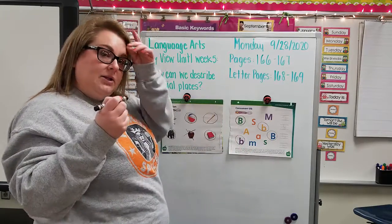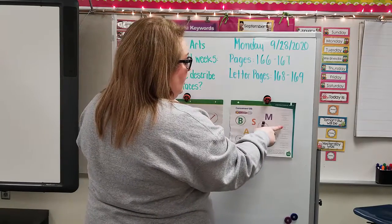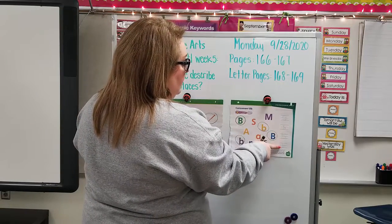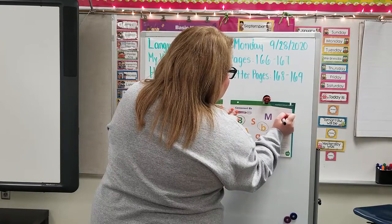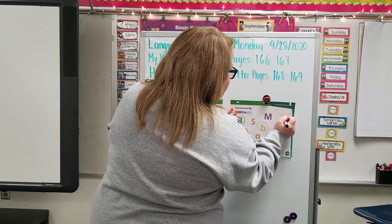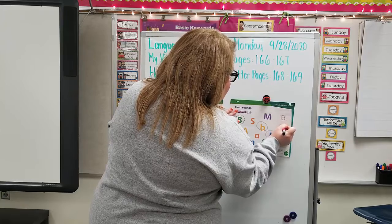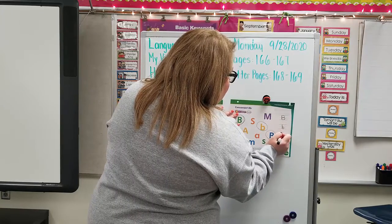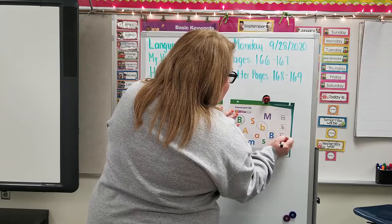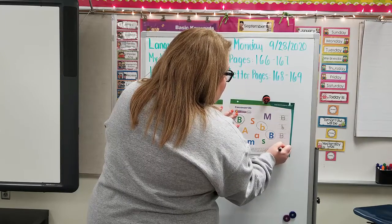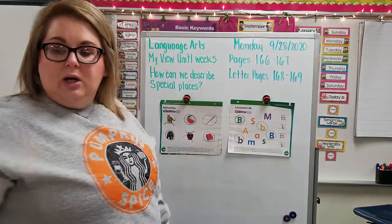Go ahead and take your pencil and trace those Bs: capital B, lowercase b, capital B, and lowercase b. Straight line down, curve it around, curve it around. Little b — straight down, curve it around once. Big B — straight down, curve it around once, curve it around twice. Little b — go straight down, curve it around once on that lower bump.